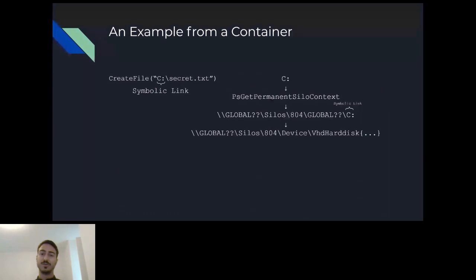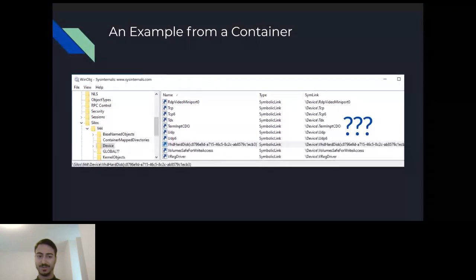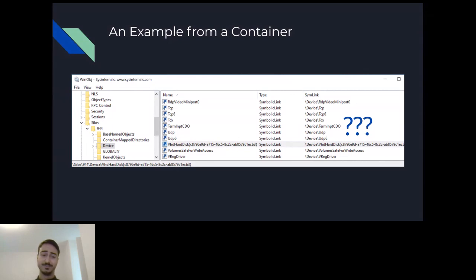Let's go over an example of accessing a file from a container. We are accessing C:\secret.txt, but this time from inside a container. The kernel calls PsGetPermanentSiloContext and retrieves a silo context — so it takes the server silo branch and queries the relevant directory under the silo 804 subdirectory. This time, the C symbolic link points to a virtual hard disk device. However, that virtual hard disk device is itself a symbolic link that points to itself — so we end up in an infinite loop. This was the point in my research when I realized something was missing, because the request to the file was successful. So it was obviously working, but it looked like we should have been stuck in an infinite loop.